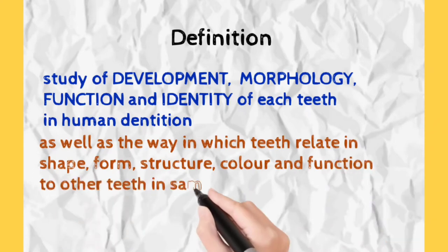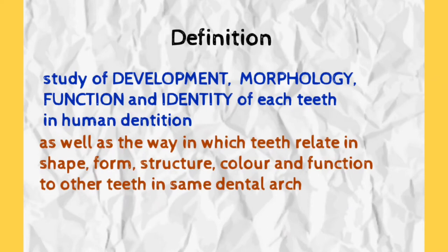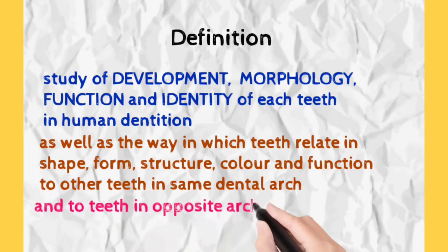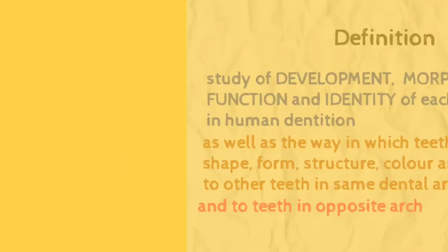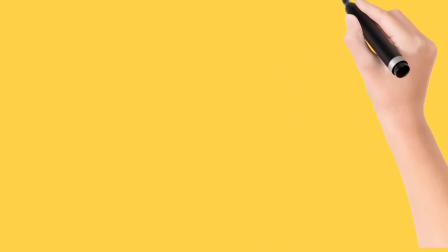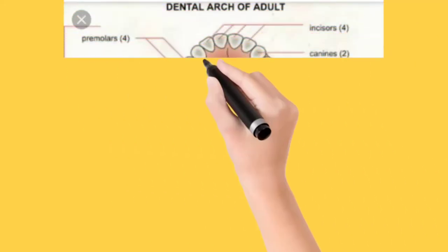It also includes the way in which teeth relate in shape, form, structure, color, and function to other teeth in same dental arch and to teeth in opposite dental arch. Let's see it with the help of a diagram what we mean by dental arch and opposite dental arch.